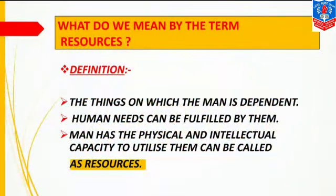Next is the definition of resources. The things on which man is dependent — for example air, water, food — these are basic things without which man will not be able to satisfy his needs. Only those things are called resources through which human needs can be fulfilled, and which man can utilize by his physical or intellectual capacity.